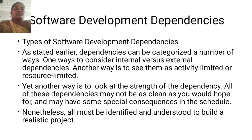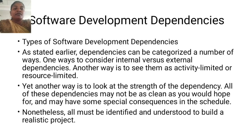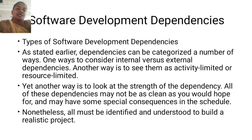Software Development Dependencies — Types of Software Development Dependencies. As stated earlier, dependencies can be dictated in a number of ways. One way is to consider internal versus external dependencies. Another way is to see them as activity limited or resource limited. Yet another way is to look at the strength of the dependency. All of these dependencies may not be as clean as you would hope for and may have some special consequences in the schedule. Nonetheless, all must be defined, identified, and understood to build a realistic project.